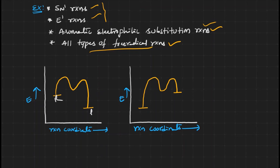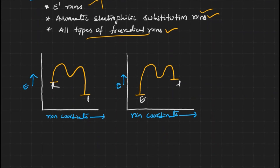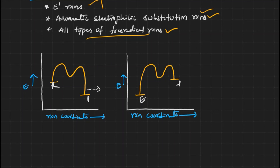Here is the energy profile diagram of a non-concerted reaction. This is the energy of the reactant and this is the energy of the product. The energy of the product is less than the energy of the reactant, meaning the reaction mixture is losing energy — energy is being liberated. When energy is liberated, it is an exothermic non-concerted reaction.